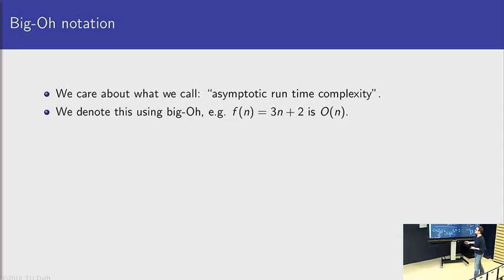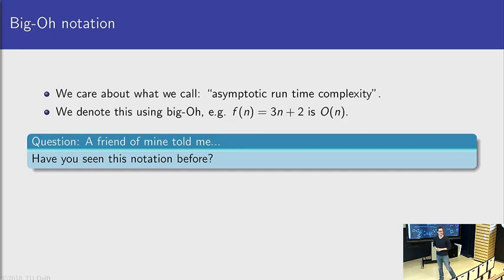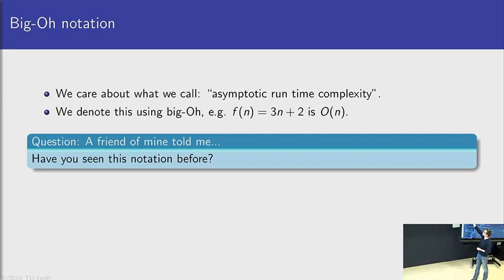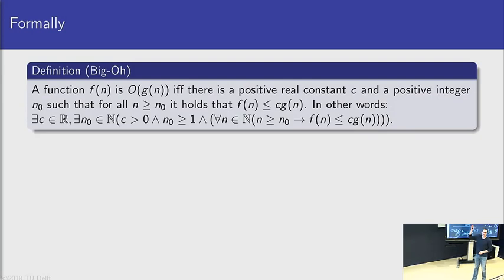So we call this asymptotic runtime complexity, and we can say something like 'this function 3n plus 2 is O(n).' Notice how I use just the English 'is' here rather than the equal sign. So Big-O—what does it mean? Well, formally it means this.